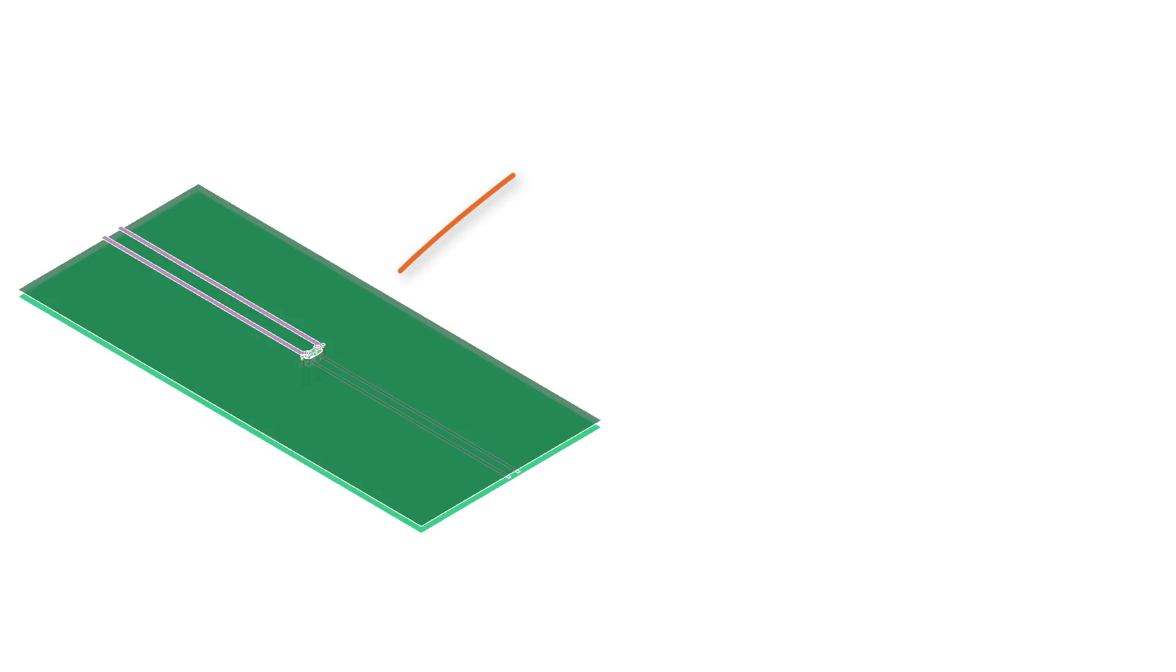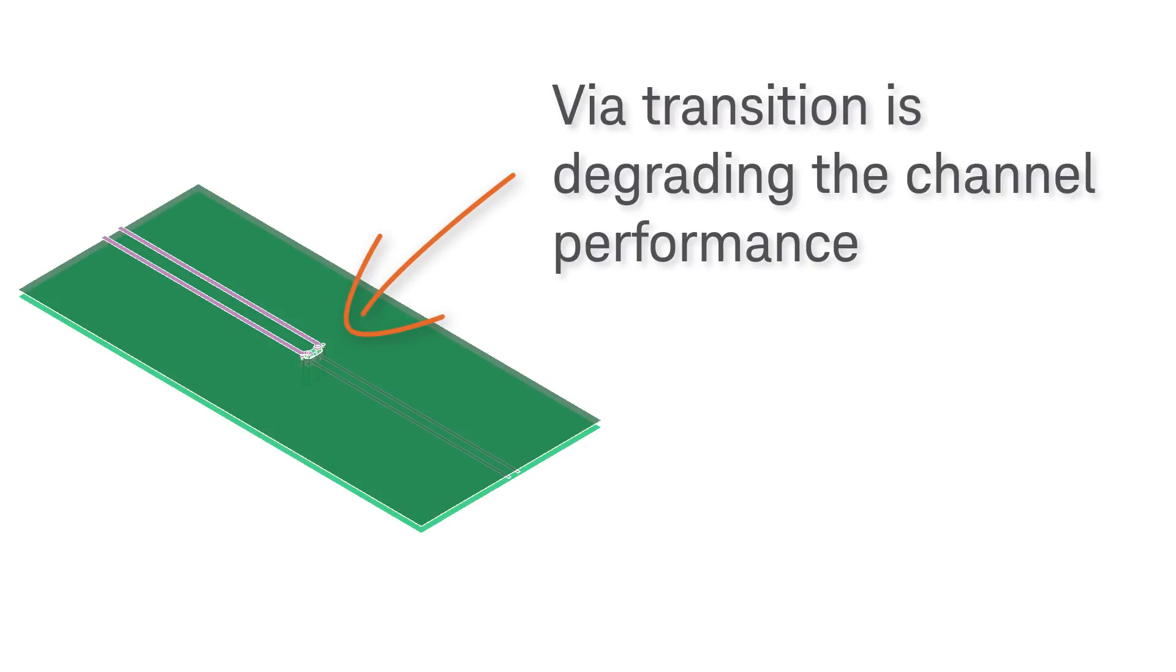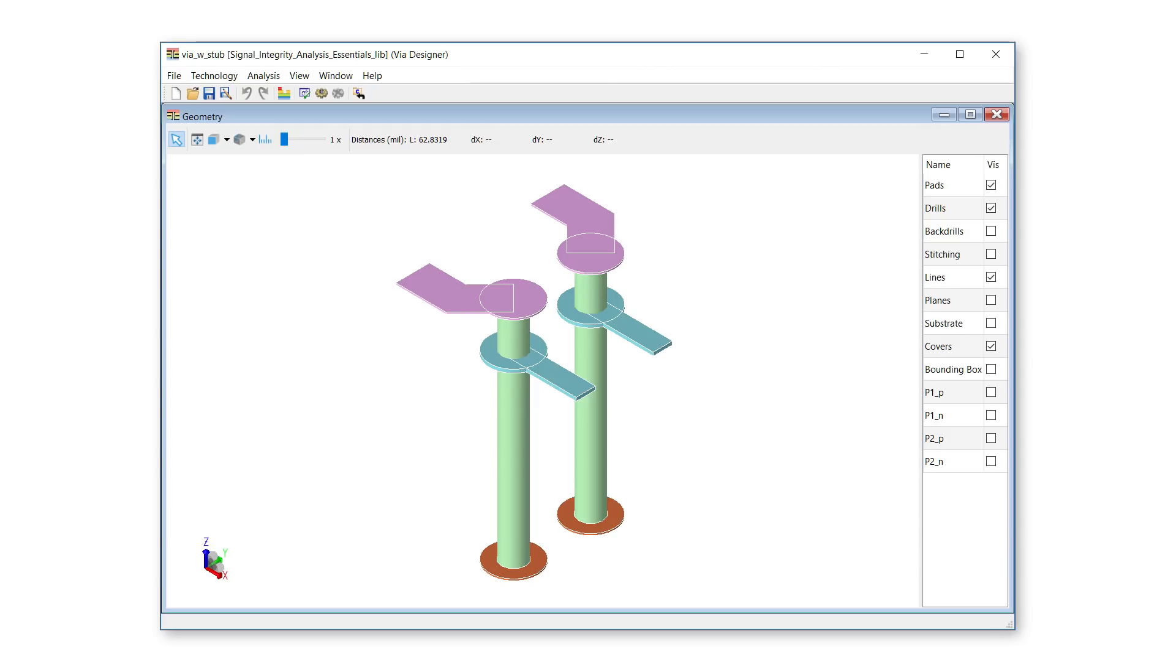It is the via transition that's degrading the performance of the channel. To verify our theory, we will take a closer look at the via design, which is also included in the ADS workspace, follow the link to download it. In the via design, we see the via stubs when the traces transition from the micro strip layer to the strip line layer. The stubs are about 75 mils.